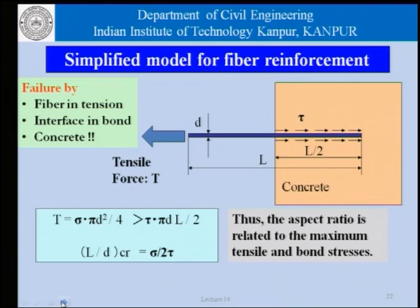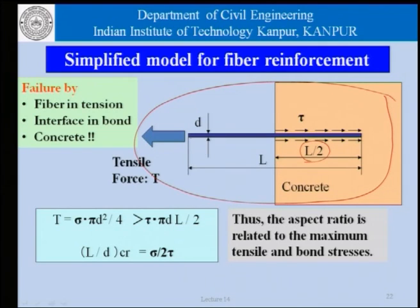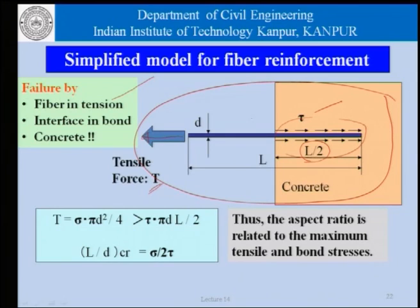Here is a simplified model for fiber reinforcement. If a fiber is embedded in concrete, half the fiber — L/2 — is embedded and half is sticking out, and a force T is applied to pull it out. This is resisted by the development of bond or friction over the surface area and length of embedment. There are three possible modes of failure: the fiber fails in tension, the fiber is pulled out due to insufficient bond at the interface, or the concrete itself fails.